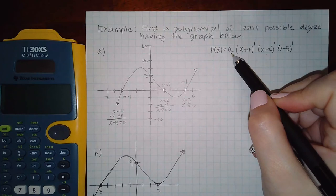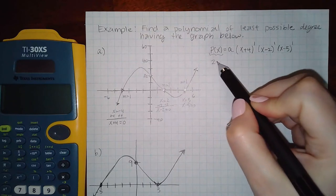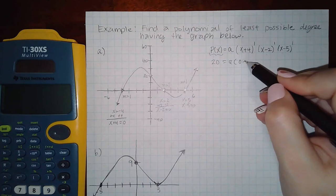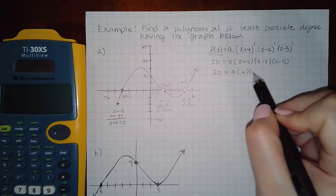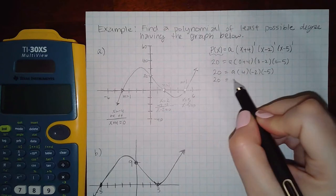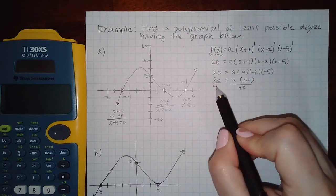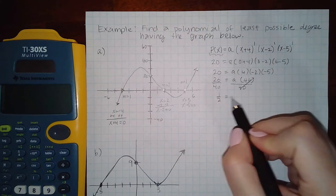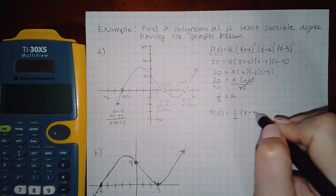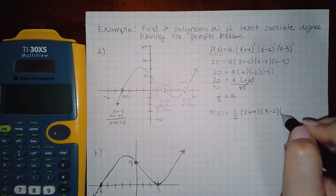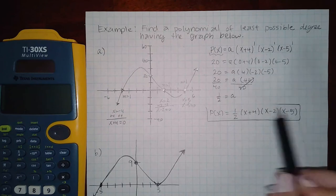To find the unknown coefficient a, use the y-intercept. I know the y-value is 20 when x equals 0. Plugging in: a times 4 times negative 2 times negative 5 equals 20, so a times 40 equals 20, meaning a equals one-half. So the full polynomial is one-half times (x plus 4)(x minus 2)(x minus 5). You don't need to write an exponent of 1 — it's understood.